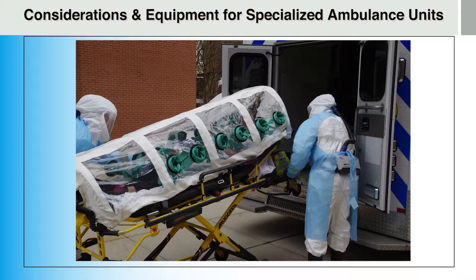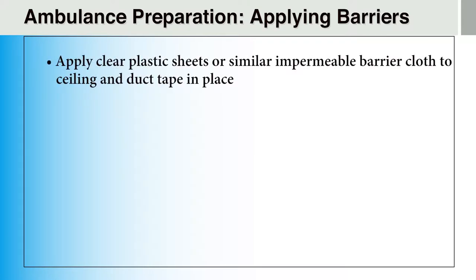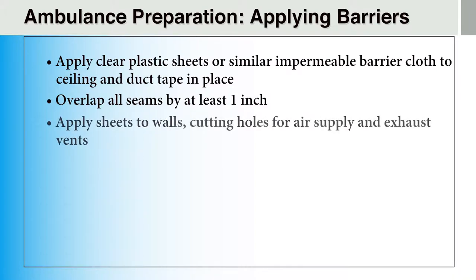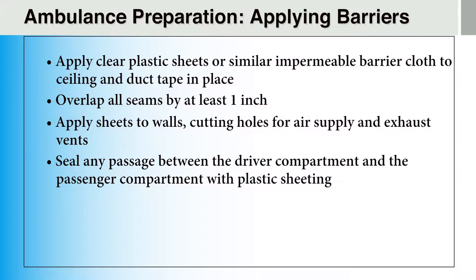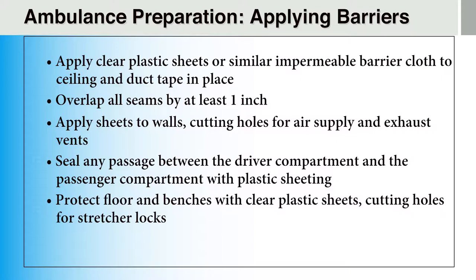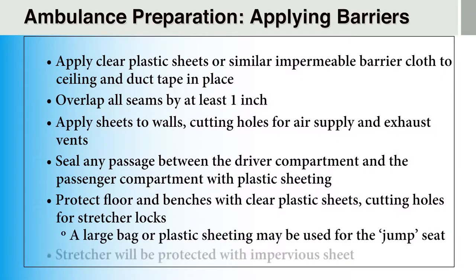Providers should always follow their jurisdictional protocols for ambulance preparation. To apply barriers, providers should apply clear plastic sheets or a similar impermeable barrier to the ceiling and duct tape them in place, overlapping all seams by at least one inch. Apply sheets to the walls of the patient compartment, cutting holes for air supply and exhaust vents. Seal any passages between the driver compartment and the passenger compartment with plastic sheeting, and protect the floor and benches with clear plastic sheets, cutting holes for the stretcher locks. A large bag or plastic sheet may be used for the jump seat, and the stretcher should be protected with an impervious sheet.